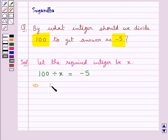This means we have 100 upon x is equal to minus 5. We need to find the value for x.